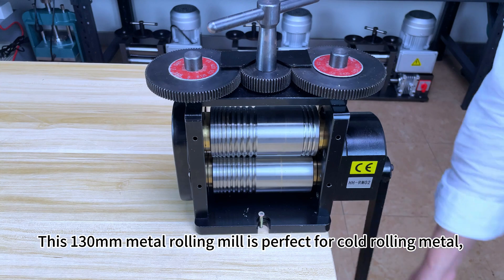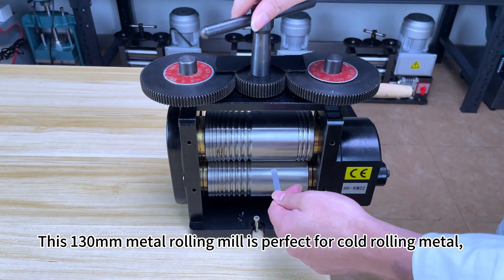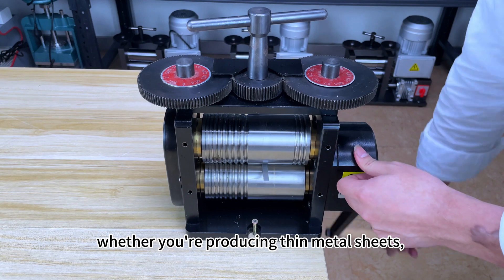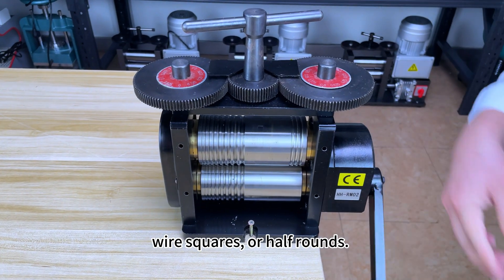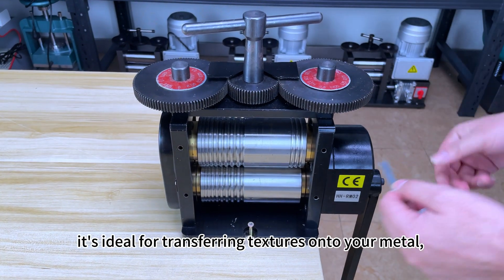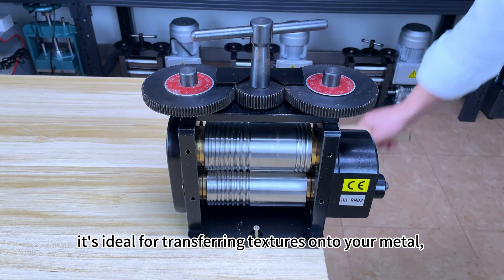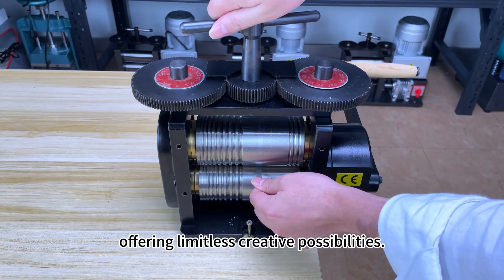This 130mm metal rolling mill is perfect for cold rolling metal, whether you're producing thin metal sheets, wire squares, or half rounds. It's ideal for transferring textures onto your metal, offering limitless creative possibilities.